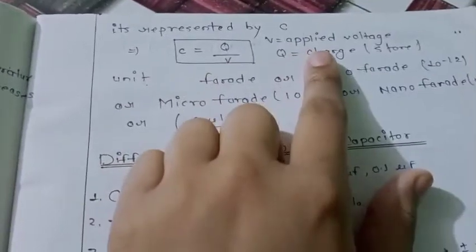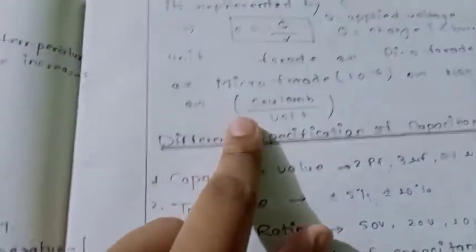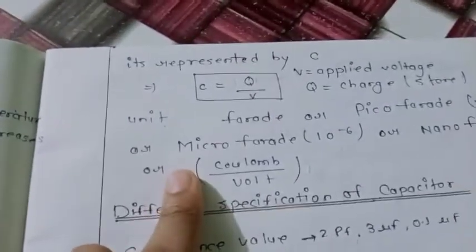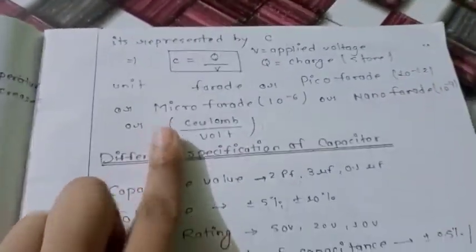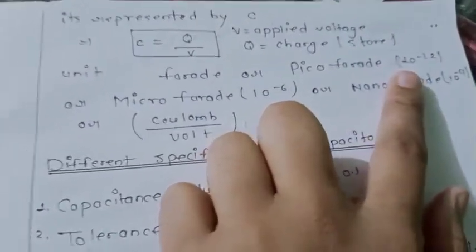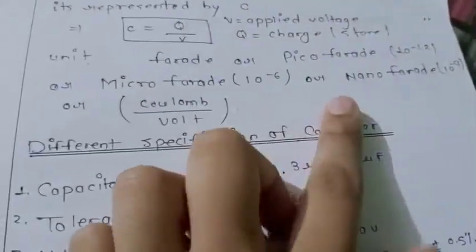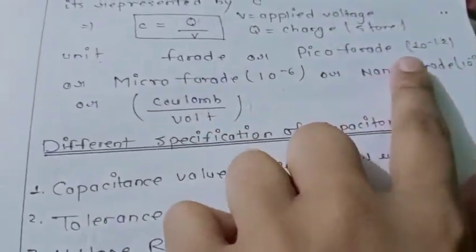Where V is applied voltage and Q is charges. Its unit is coulomb per volt, and the standard unit is farad. Picofarad is equal to 10 to the power minus 12 farad.